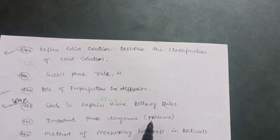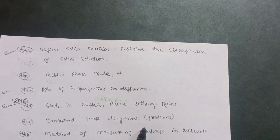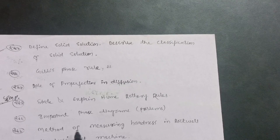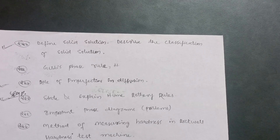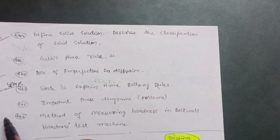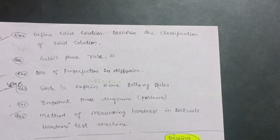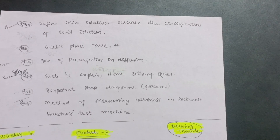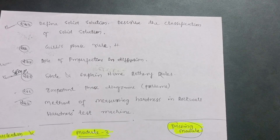Important phase diagrams — there are a few problems. If you are comfortable with problems, go through them; if not, just leave the problematic part and focus on theory. Then, the method of measuring hardness in the Rockwell hardness test machine. This is enough for Module 2. Cover at least six of the eight questions; you can leave the problematic part since this is primarily a theoretical subject.